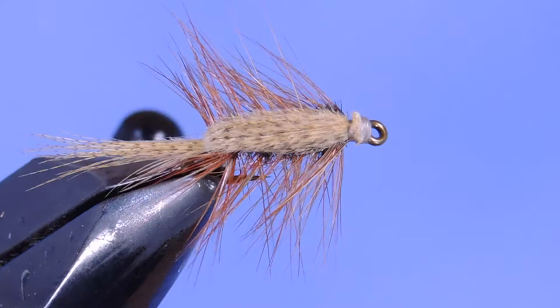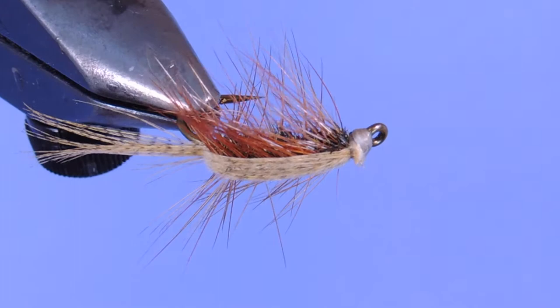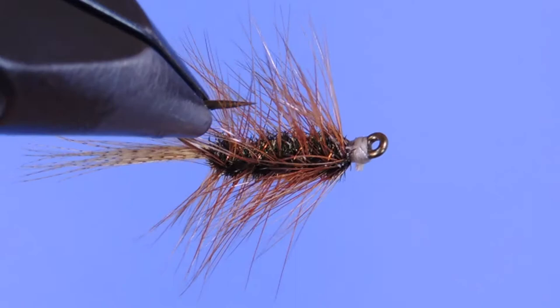This fly is excellent for western and eastern lakes. It's tied in a fullback style and it can be fished on either a dry line with a long leader, say 12 to 15 feet, and just fished below the surface.